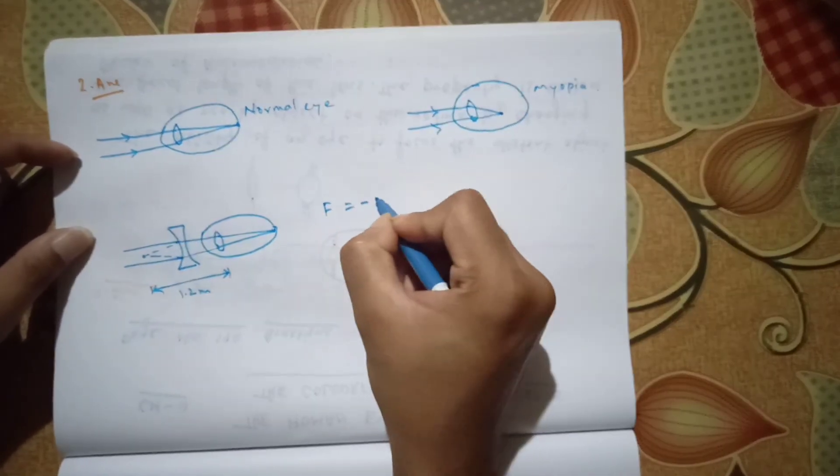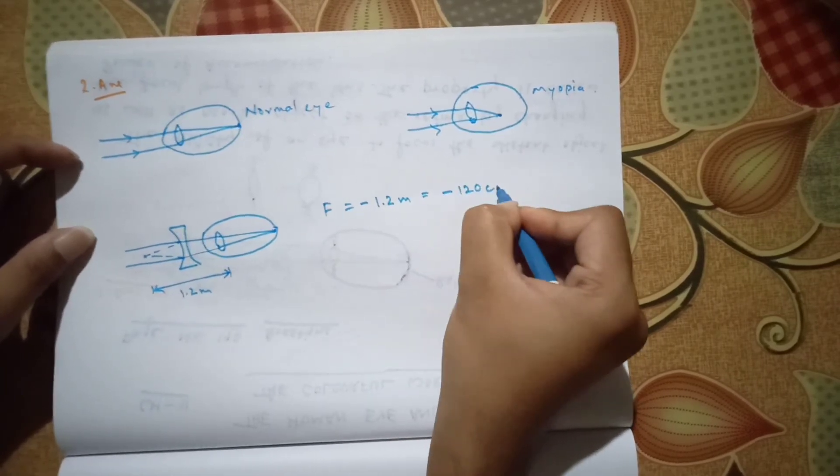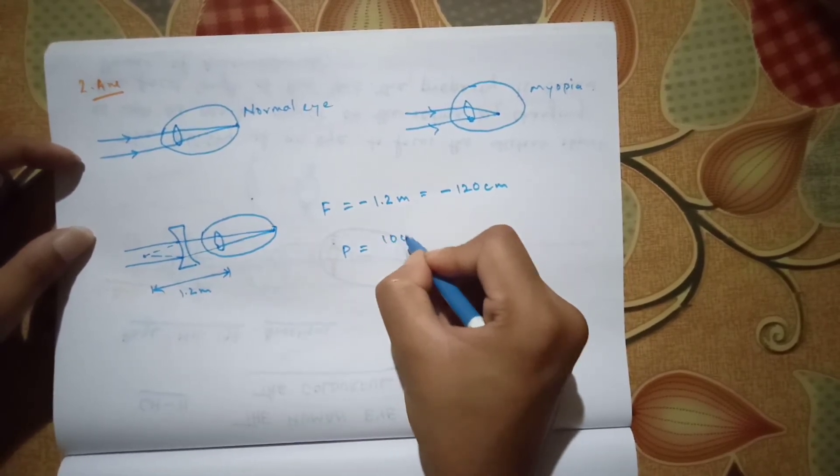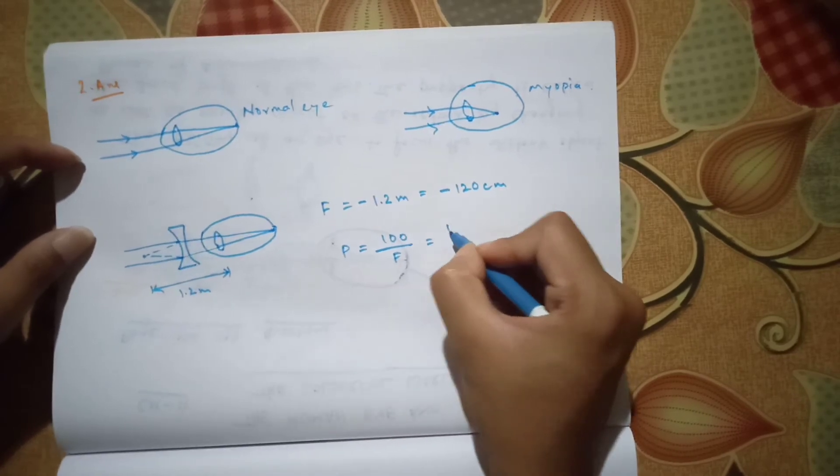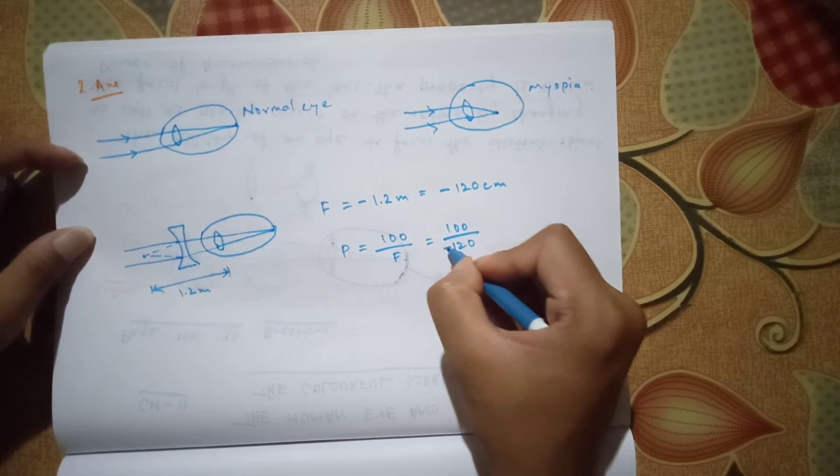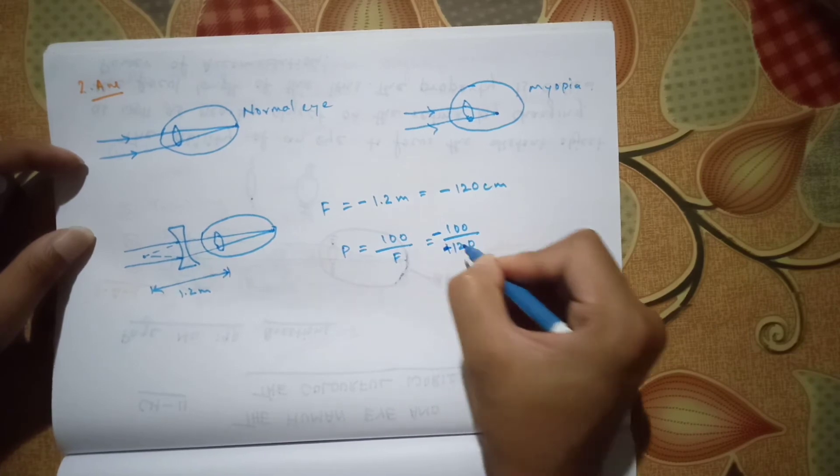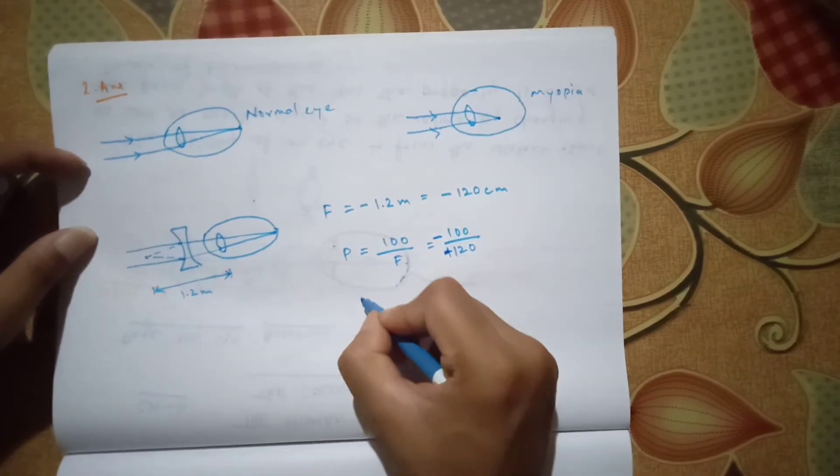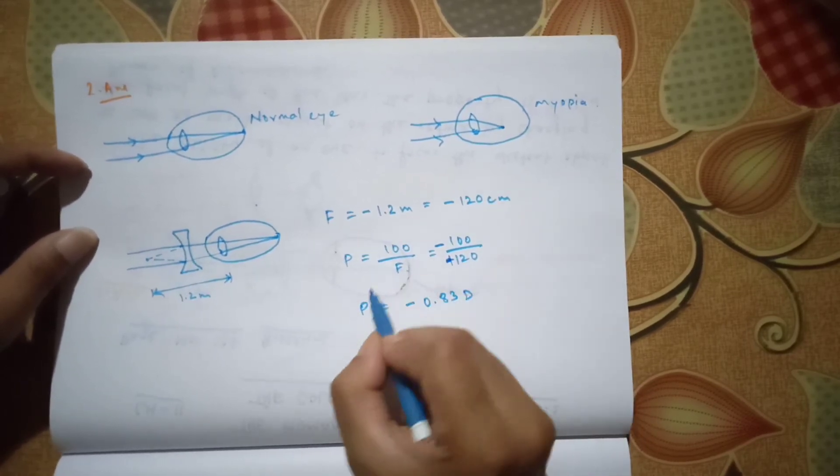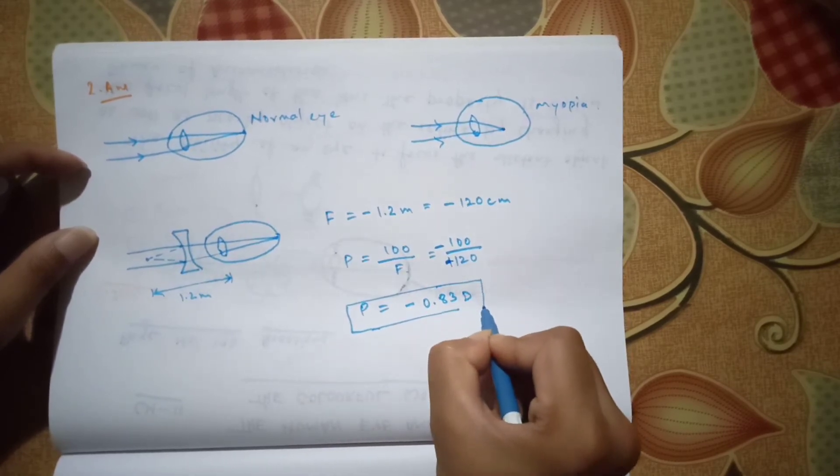The focal length is due to this concave lens. We have to put the power in negative, which is minus 1.2 meters, which is equal to minus 120 centimeters. Now the power will be 100 by focal length. 100 by focal length is minus 120. It will be about P is equal to minus 0.83 diopter. Always remember that the unit of power in case of lens is diopter.